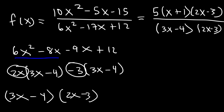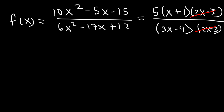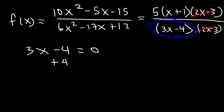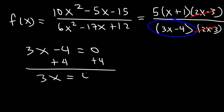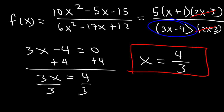Notice that we can cancel (2x minus 3) from both numerator and denominator. So to find the vertical asymptote, it's going to be based on the remaining factor alone. Set 3x minus 4 equal to 0, add 4 to both sides to get 3x equals 4, then divide by 3. So the vertical asymptote is x equals 4 over 3. That's it for this problem.